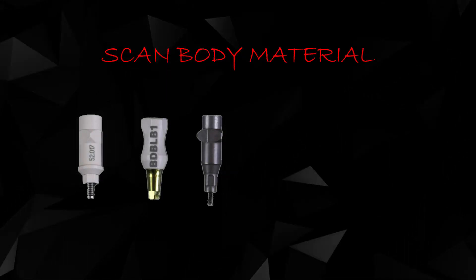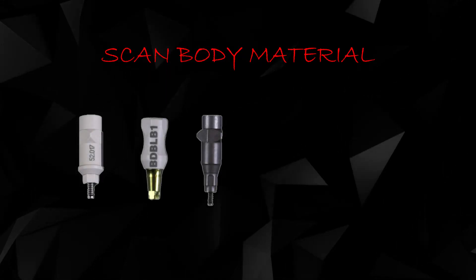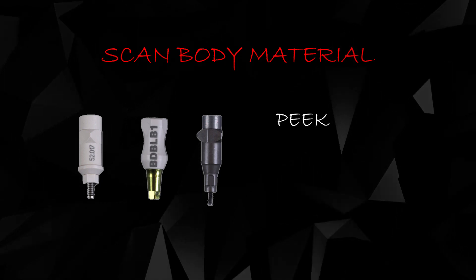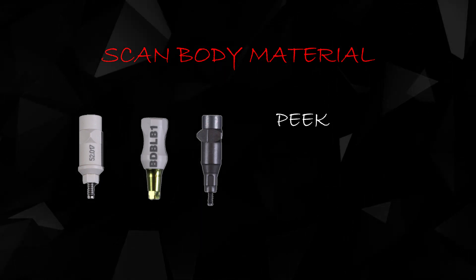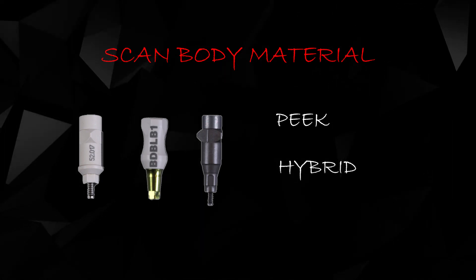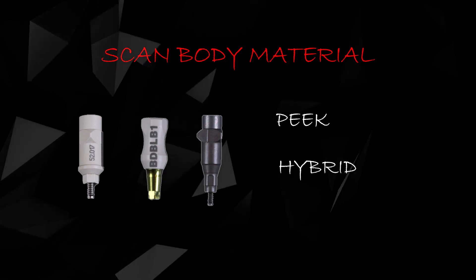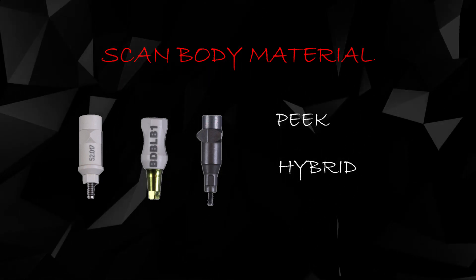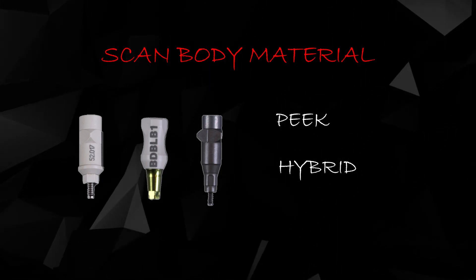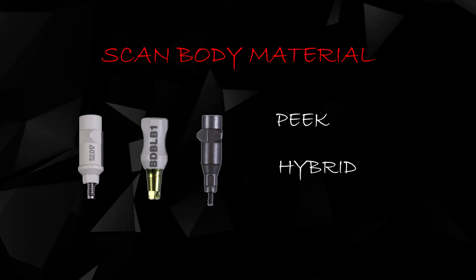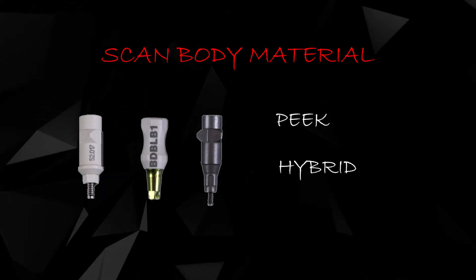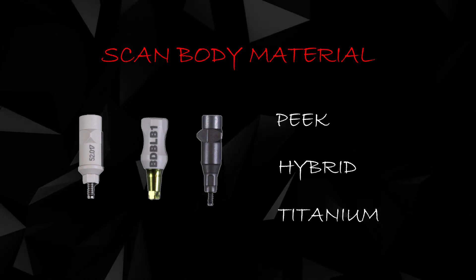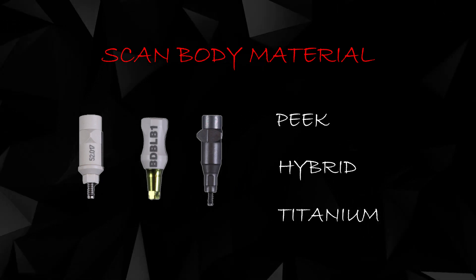The classical material that scan bodies have been made of is PEEK. However, since PEEK is radiolucent, hybrid scan bodies are now used which have a titanium base and a PEEK superstructure, making them easily visible on the IOPA and very easy to scan as well. Some newer fully titanium scan bodies are also available these days and can be sourced very easily.